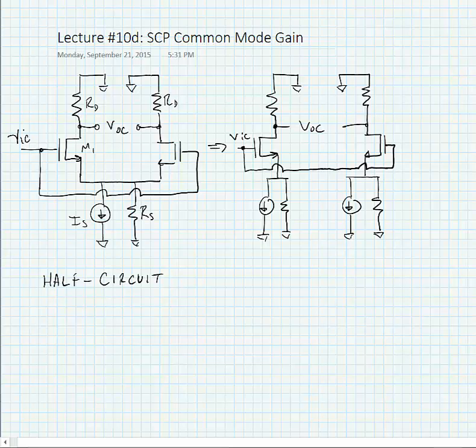In the last part of this lecture we're going to look at the common mode gain for the source coupled pair. What I've done here is I've taken our source coupled pair and I've coupled the two inputs so that we're putting a common mode voltage into both sides of the differential pair.